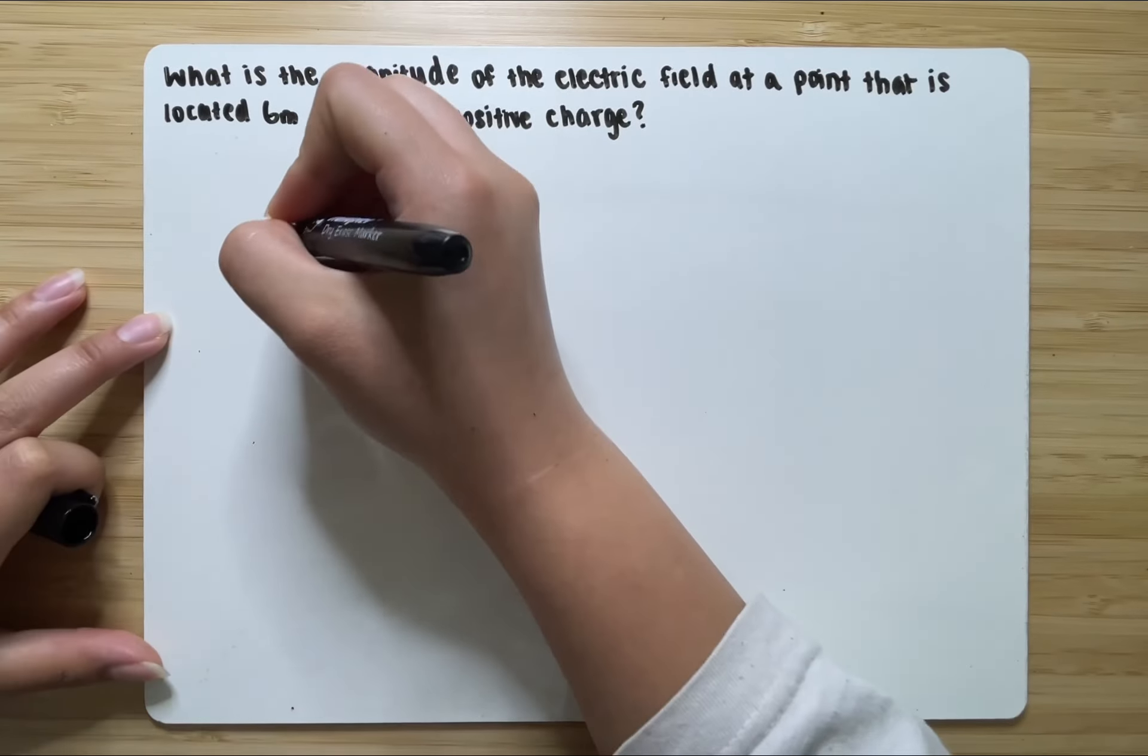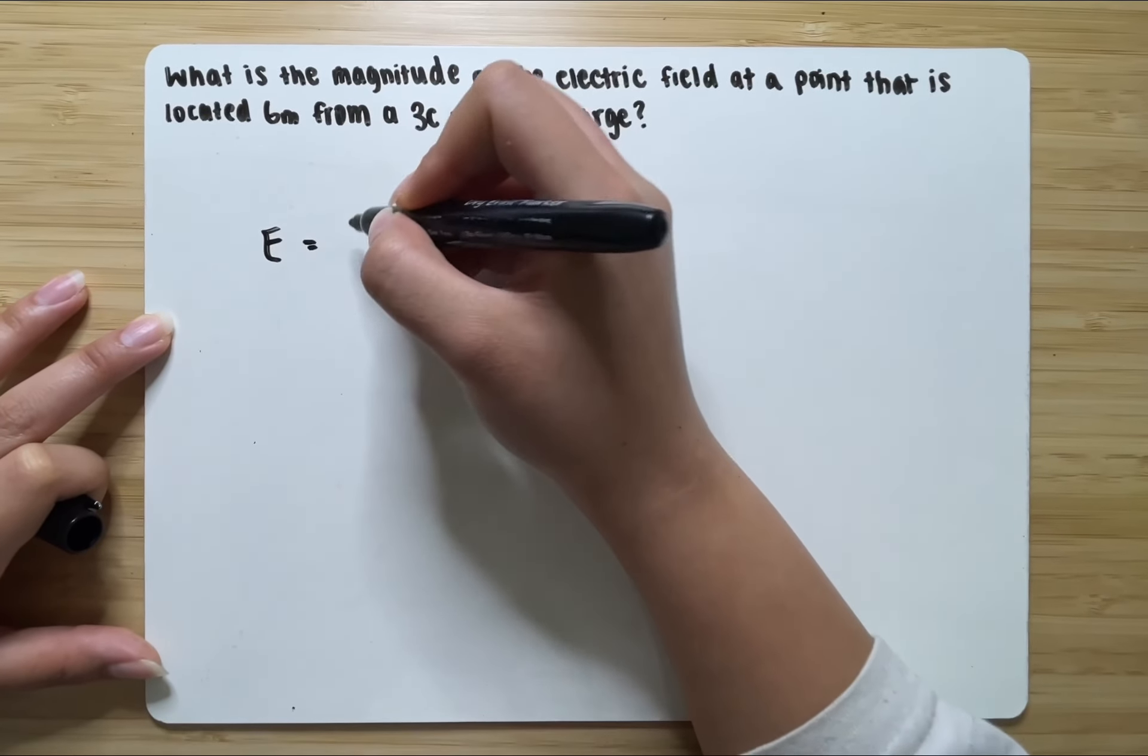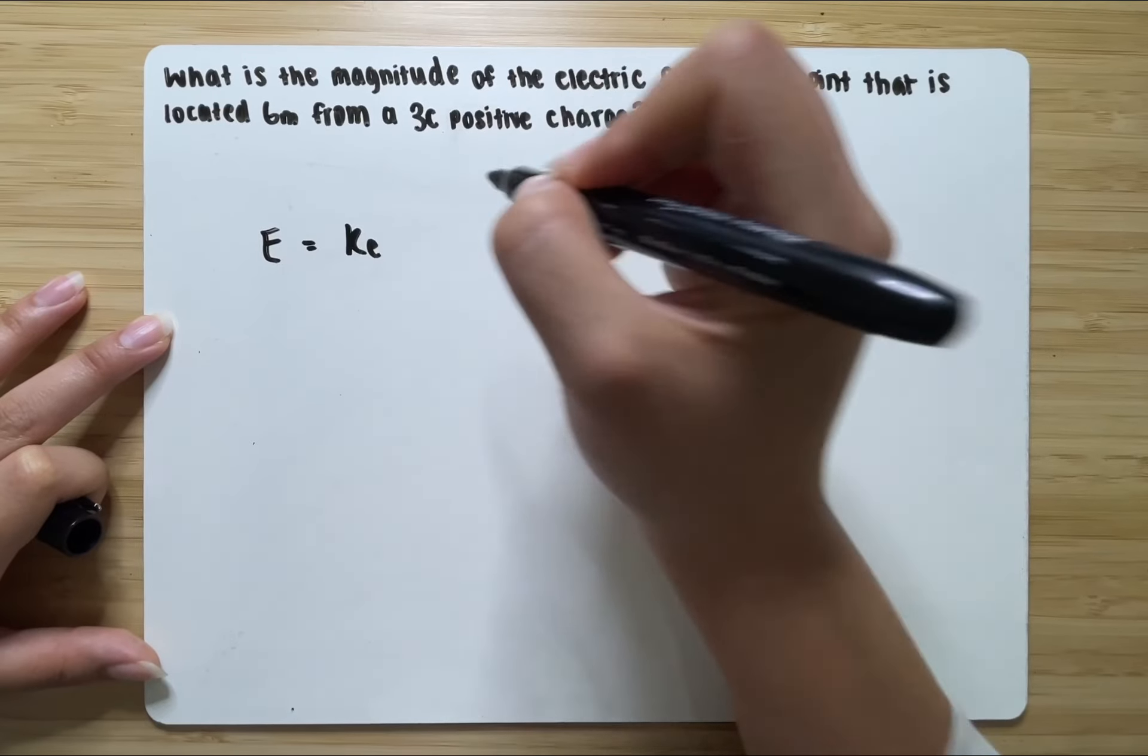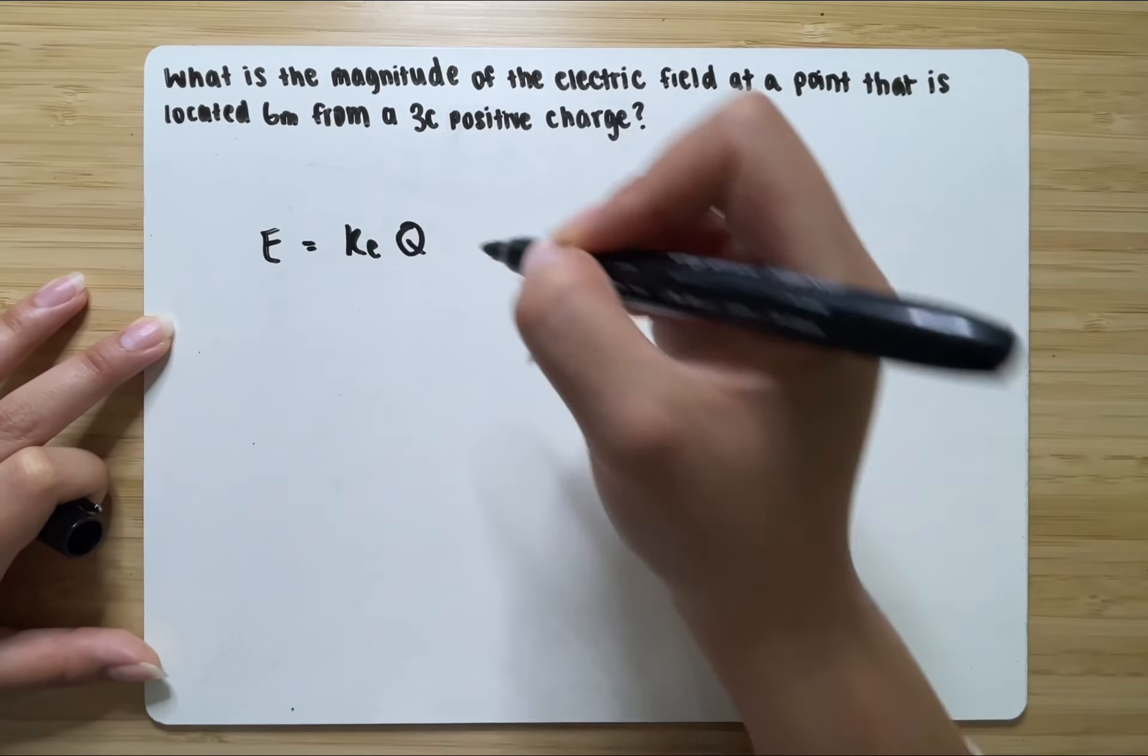We need to remember that the equation to find the electric field at a point is equal to Coulomb's constant times the point charge, so let's call the point charge big Q.